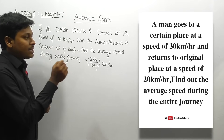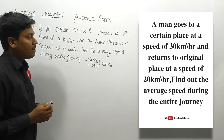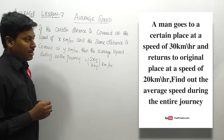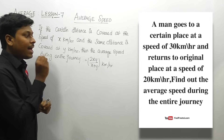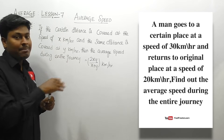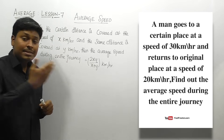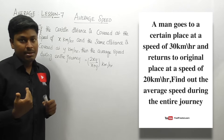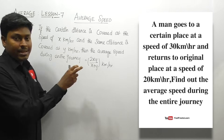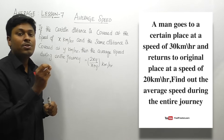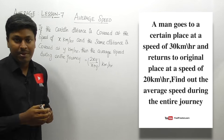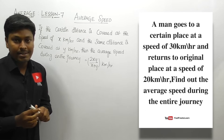Question number one: a man goes to a certain place at a speed of 30 kilometers per hour and returns to the original place at a speed of 20 kilometers per hour. Find the average speed during the entire journey. Since he goes and returns to the same place, the distance in both cases is the same, so we use the formula 2xy divided by x plus y.